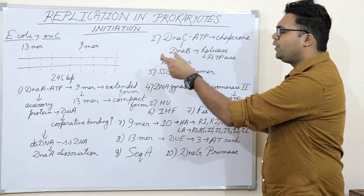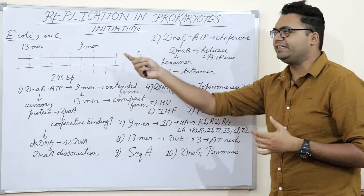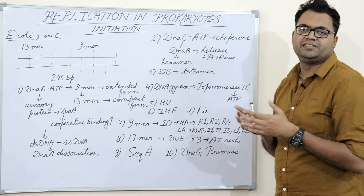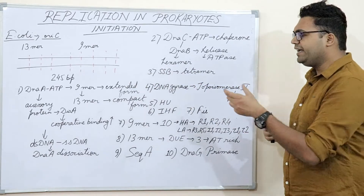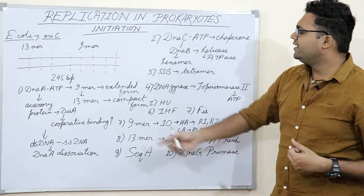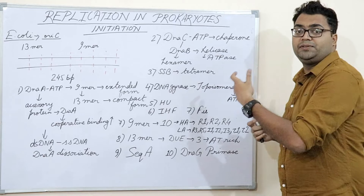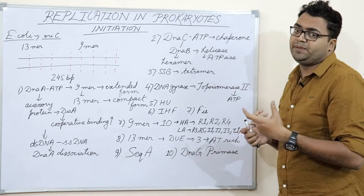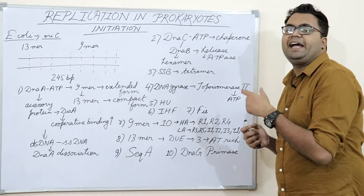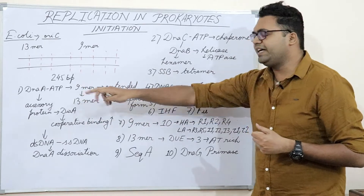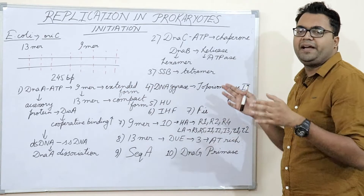The first protein to recognize the 9mer sequence and bind to it is DnaA. DnaA is an ATPase — it binds with ATP and becomes active as DnaA-ATP. The accessory protein associated with DnaA is DiaA. After the association of DiaA with DnaA-ATP, it enhances the cooperative binding of DnaA protein so that the dual replication fork can be initiated.